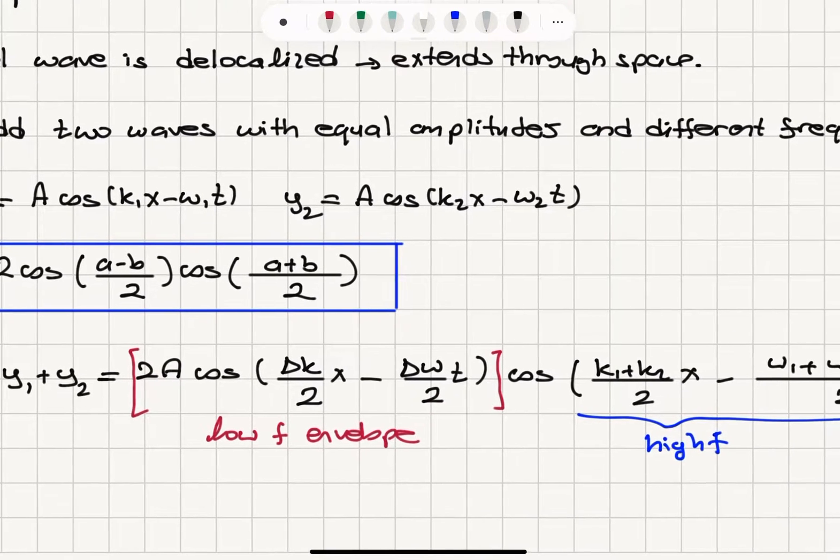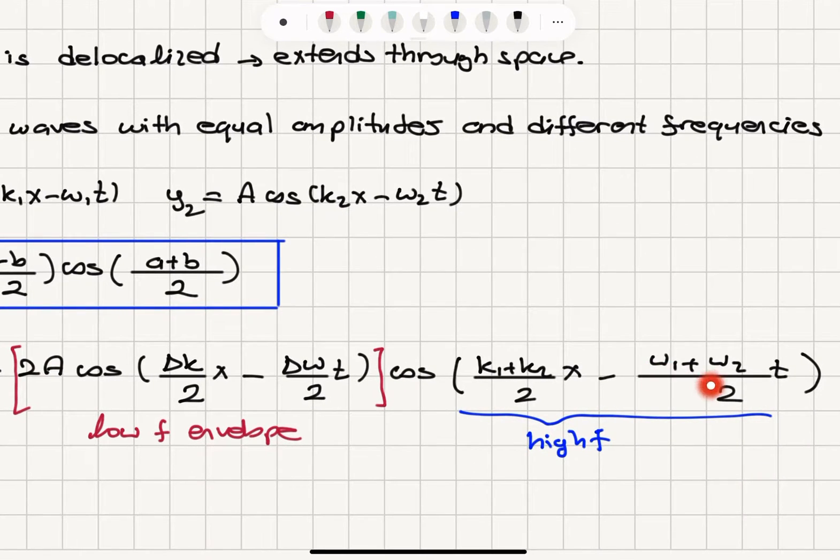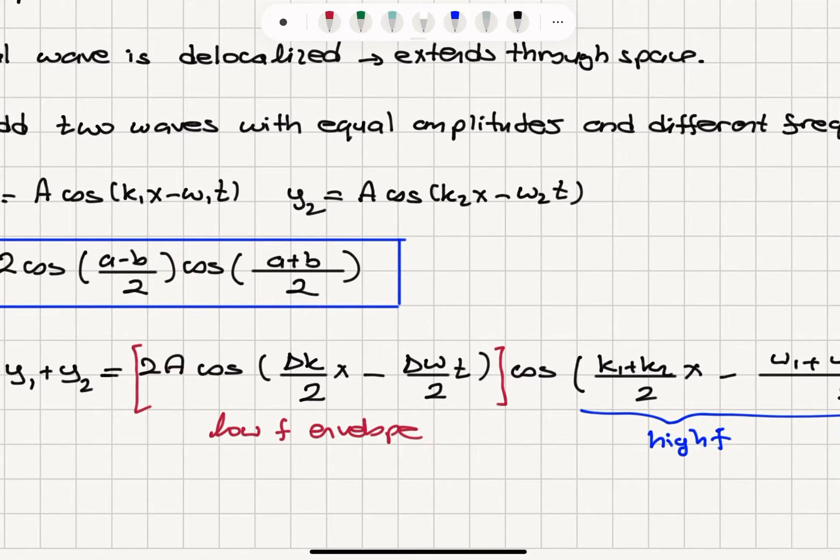And then we will have k1 plus k2 over 2 x and minus omega 1 plus omega 2 over 2 t. So you can see that this is the high frequency oscillation and this is a low frequency envelope.